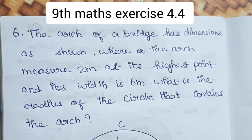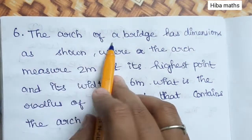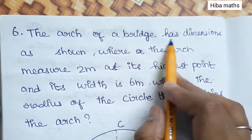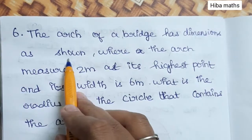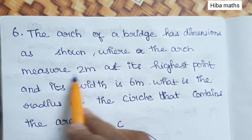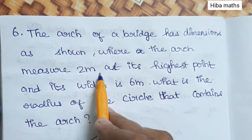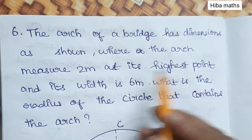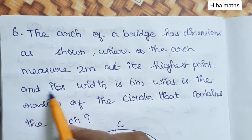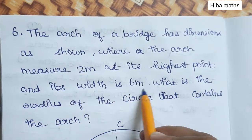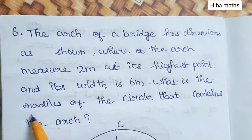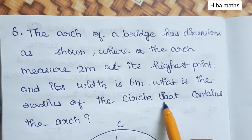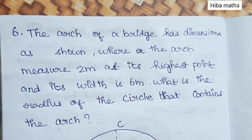Hello students, welcome to Hibamax. 9th standard math exercise 4.4. The arc of a bridge has dimensions as shown, where the arc measures 2 meter as its height and its width is 6 meter. What is the radius of the circle that contains the arc?